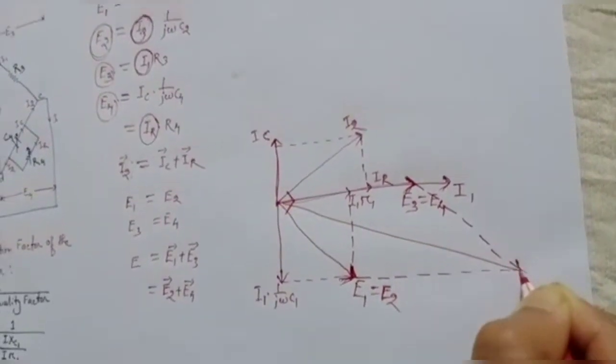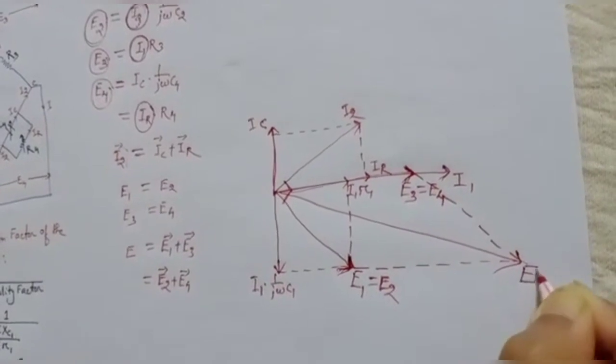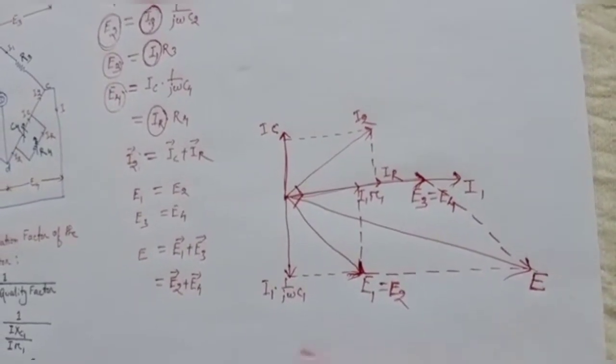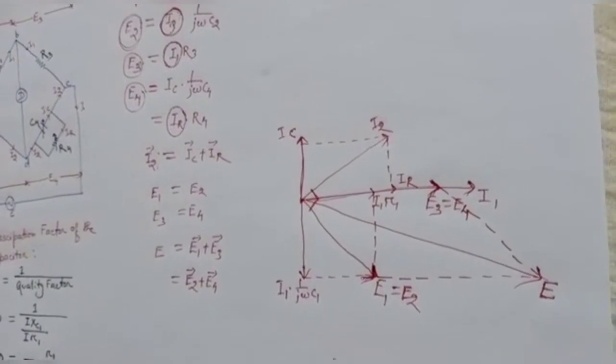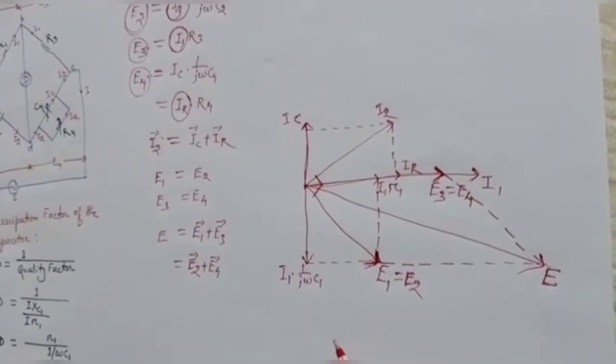The total circuit voltage E is the phasor sum of E1 and E3, or equivalently E2 and E4. This completes the phasor diagram of the Schering Bridge. In the next video I will tell you about the Wien Bridge. Thank you — if you like this lesson, give it a thumbs up and subscribe to the channel. Happy learning!